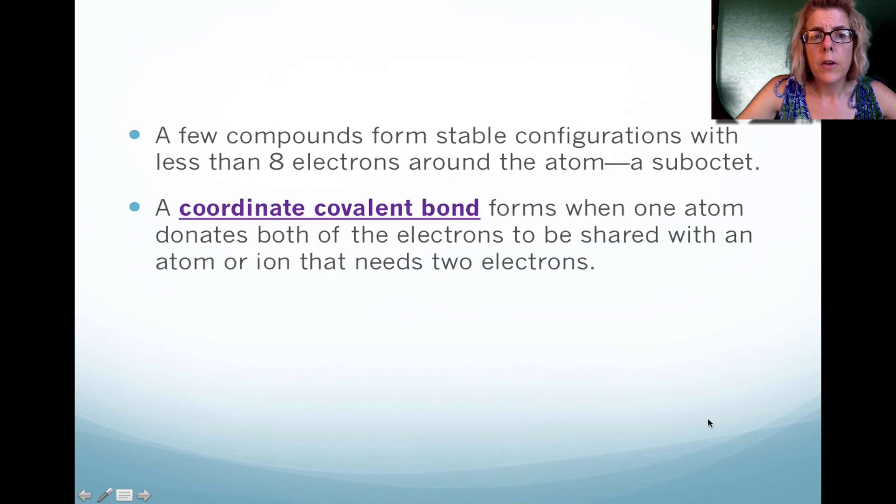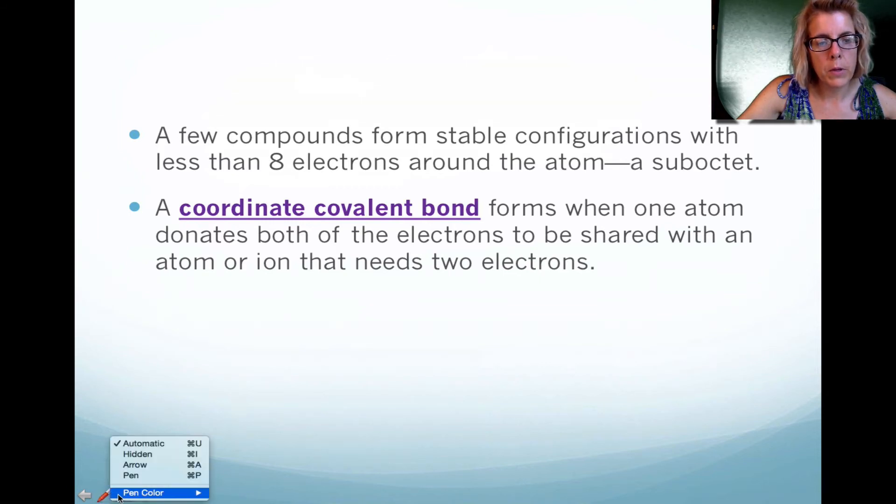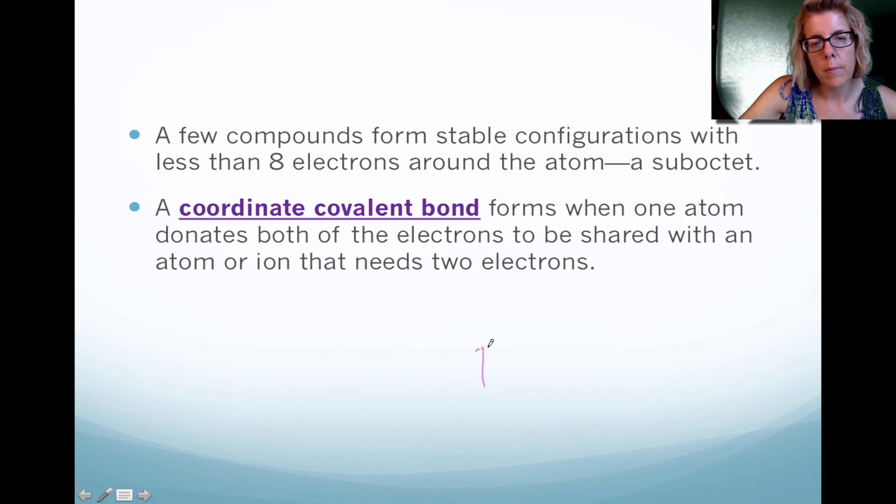There are compounds that actually have stable configurations with less than eight, and we call that a sub-octet. If you remember from my beryllium drawing that I did with the last video, that was a sub-octet. But if you have boron trihydride, that has a sub-octet.